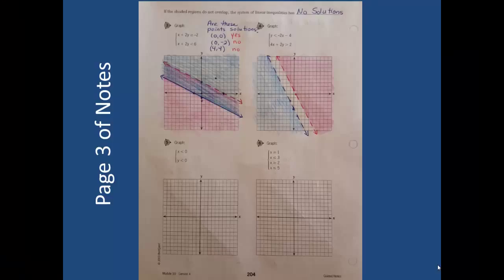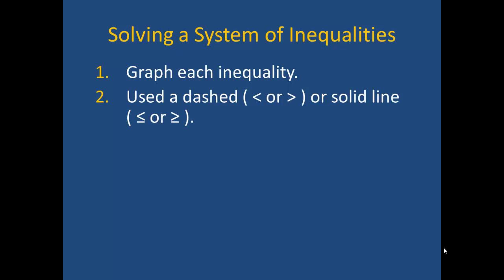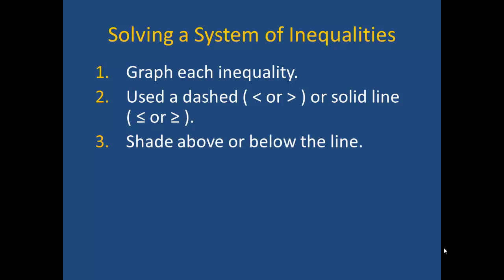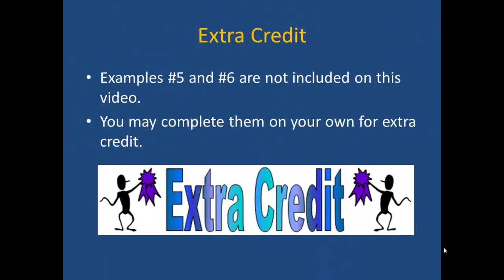You should now have page 3 of your notes completed — take a minute to catch up if needed. In review, when solving a system of inequalities, we first graph each inequality using a dashed or solid line, then shade above or below the line as indicated by checking a test point, often (0, 0). The solution is the set of points included in the overlapping shaded areas. Examples 5 and 6 on your handout are not included in this video, but you may complete them on your own for extra credit.